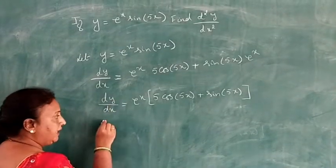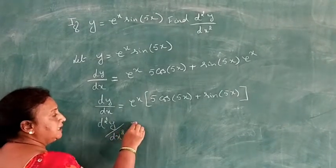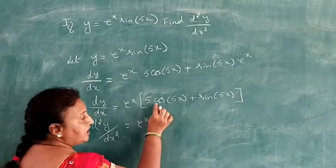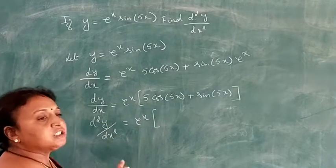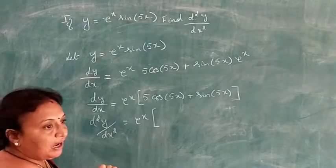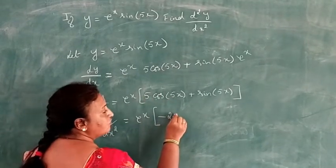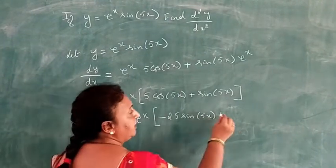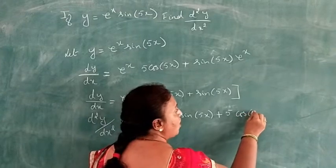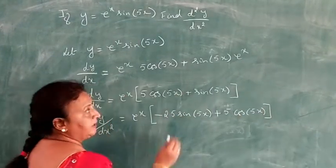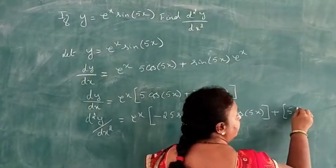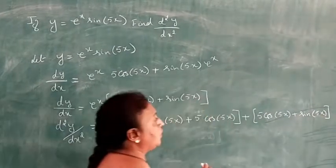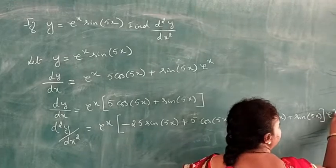For d²y/dx²: first function e to the power x kept constant times derivative of the second function — derivative of cos 5x is minus 5 sin 5x giving minus 25 sin 5x, plus derivative of sin 5x is 5 cos 5x — plus the second function 5 cos 5x plus sin 5x times derivative of e to the power x, which is e to the power x.